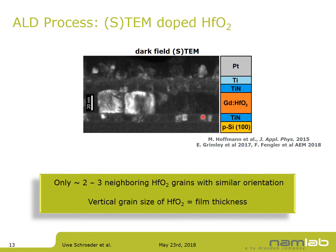This shows how capacitor structures after anneal look: the titanium nitride electrodes are clearly visible with the hafnium oxide layer in between. Typically hafnium oxide grains are on the order of the physical film thickness. For a polycrystalline material, depending on the orientation of the grains, you have different orientations of the polar axis within those grains, which can impact the uniformity of the ferroelectric behavior across the layer.